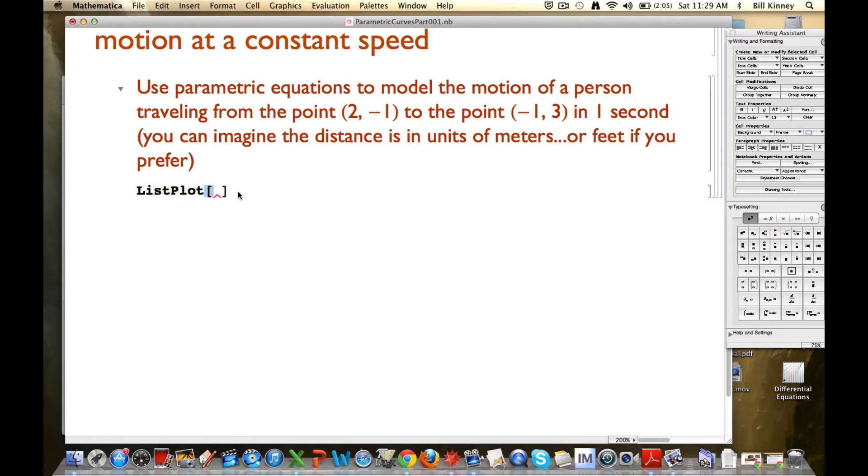ListPlot is a command, a function in Mathematica. And all commands, all functions in Mathematica that take input and return an output use square brackets like you see here to indicate that input should go in there. And you see this little red arrow, this little red up arrow, is indicating that input is needed here. We want to plot a point. (2, -1).